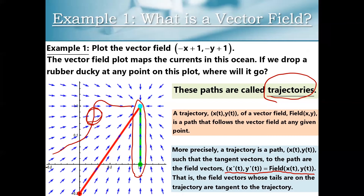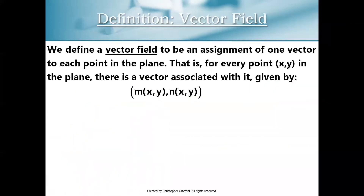So if you have that property down in your notes, we can move on. A vector field is an assignment of one vector to each point in the plane. One vector per point in the plane is one of the big ideas here.